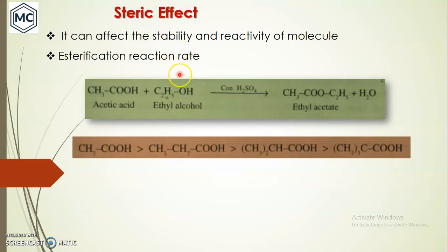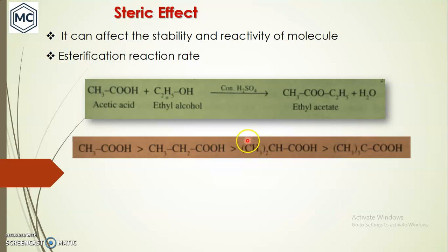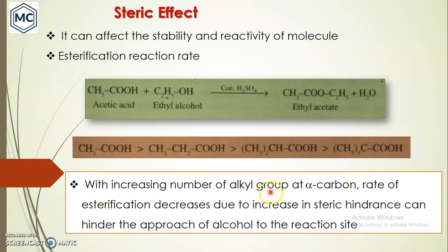Next is esterification reaction rate. The reaction rate can change depending on the steric effect. For example, in the esterification of a carboxylic acid with ethyl alcohol to give ethyl ester, the reaction rate of different acids decreases as you have more alkyl groups on the alpha carbon atom — three alkyl groups, then two, then one, then none. With increasing number of alkyl groups at the alpha carbon, there is greater steric hindrance that hinders the approach of the alcohol to the reaction site.